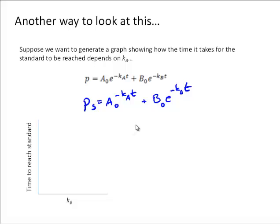What I want to do here is plot—now I'll call that tₛ—and I want to plot tₛ versus kᵦ. To follow the same approach that we used, we need to solve our equation for tₛ. Then we might be able to generate some plot where we have the time to reach the standard as a function of kᵦ.